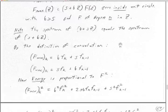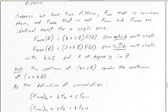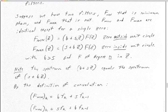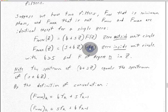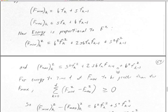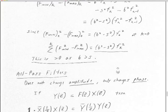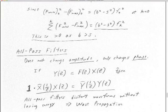For minimum energy delay, we need the sum from k=0 to T of (F_min² − F_max²) to be ≥ 0. The difference F_min[k]² − F_max[k]² factors as (B² − S²) times (F[k]² − F[k−1]²). Summing over all k gives (B² − S²) times F[k]². Since F[k]² > 0 and B is greater than S in magnitude, B² − S² > 0, so the whole thing holds — we have minimum energy delay proven.